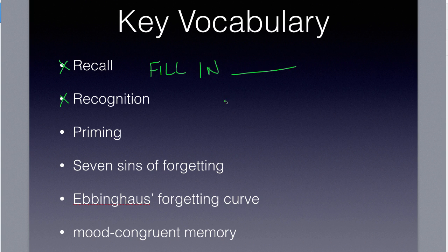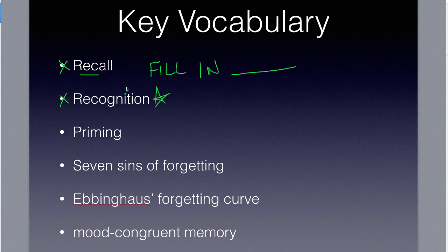Recognition, on the other hand, the person only needs to identify the item previously learned. Recall was when I told you to name the seven dwarves. Recognition was when I gave you a list of a whole mess of names and the seven dwarves were in there. Everybody did better on recognition than recall. Recall is the more difficult of the two, but it's the one we need to be best at in this class.